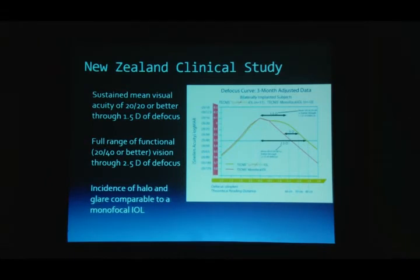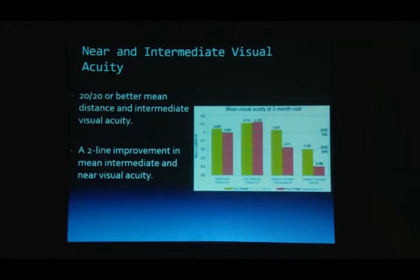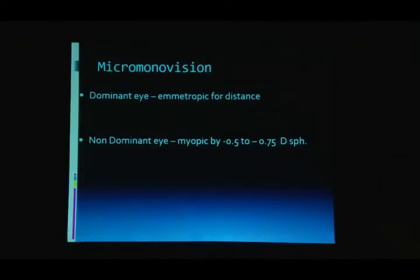Monovision can give satisfactory vision without the glare and halo problems of multifocals. With EDOF IOLs, near vision starts from 40 cm, though patients often want to read at closer distances. Dr. Krishnabasappa mentioned that monovision can give satisfactory vision to patients with fewer complications like glare and halos.